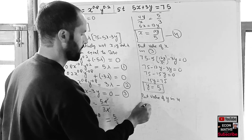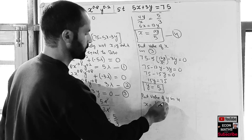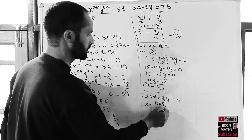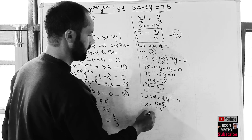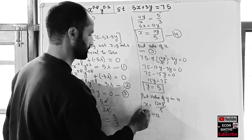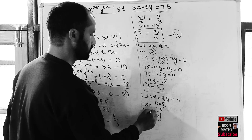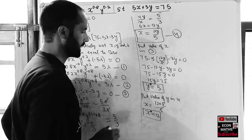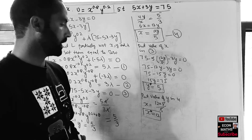Substituting y = 5 into Equation 4: x = 12 * 5 / 5. The 5s cancel, giving x = 12. Therefore, the optimal bundle is x = 12 and y = 5.